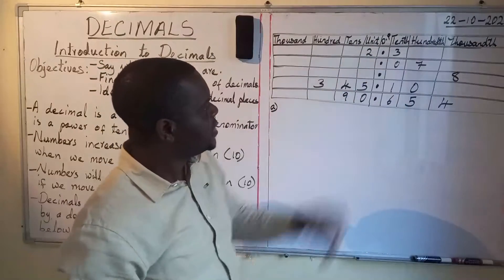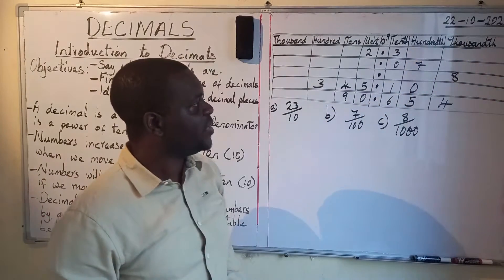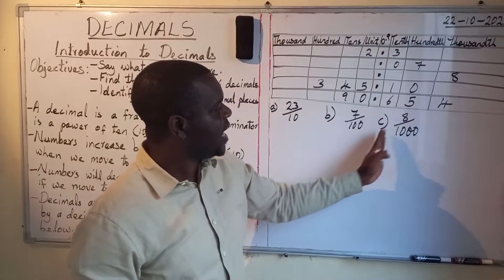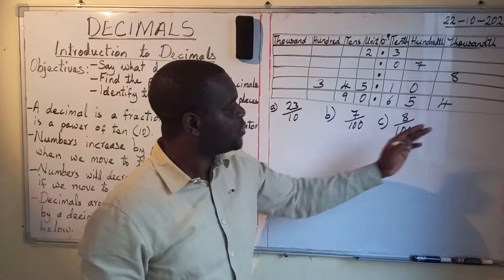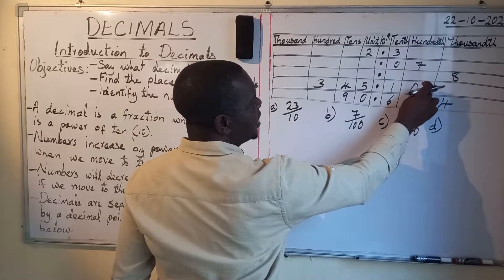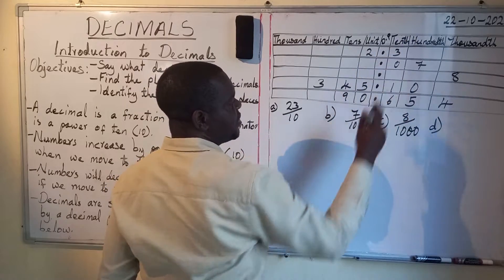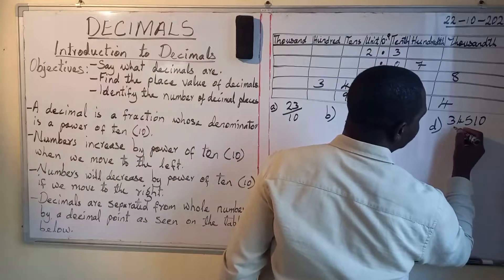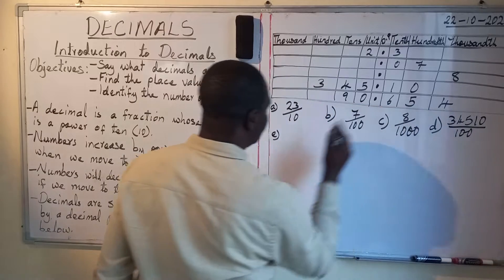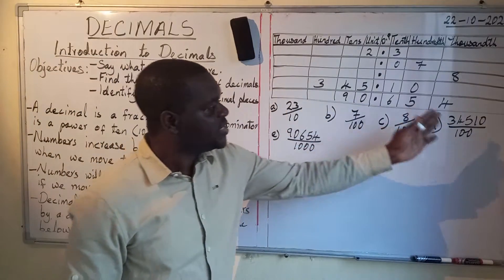Similarly, numbers decrease by a power of 10 when we move to the right. Starting from thousands and moving right: thousand, then 100, then 10, then units. Our focus is after the unit — when we talk about decimals, we are talking about the values after the unit.